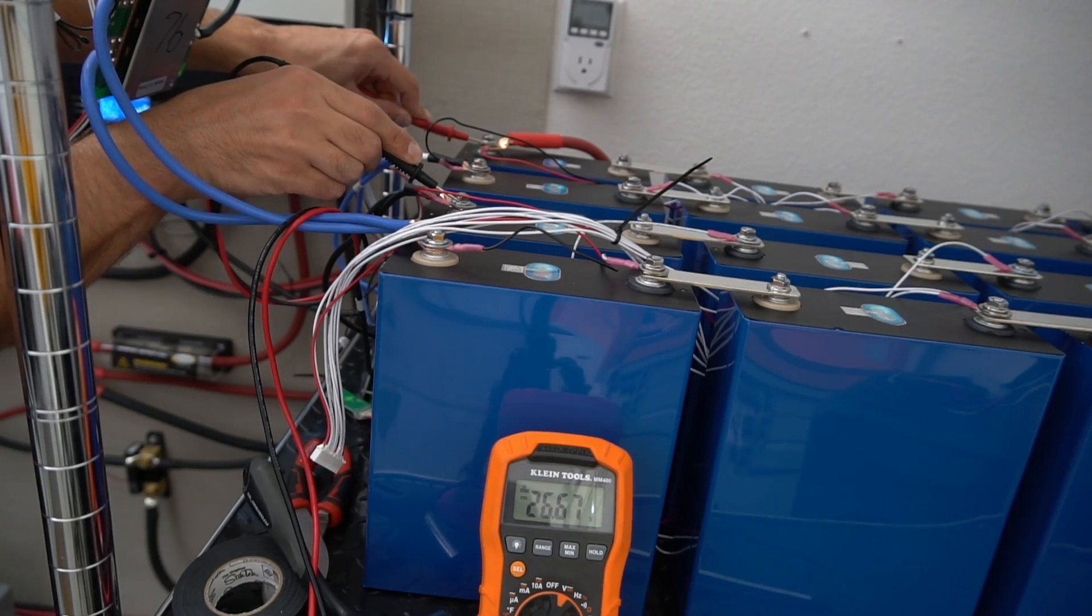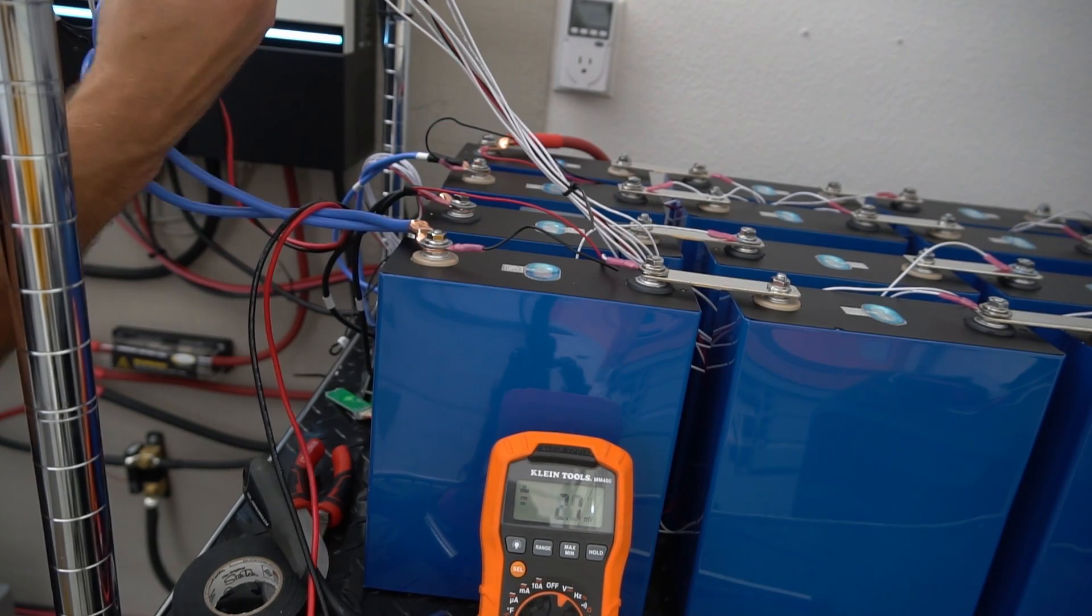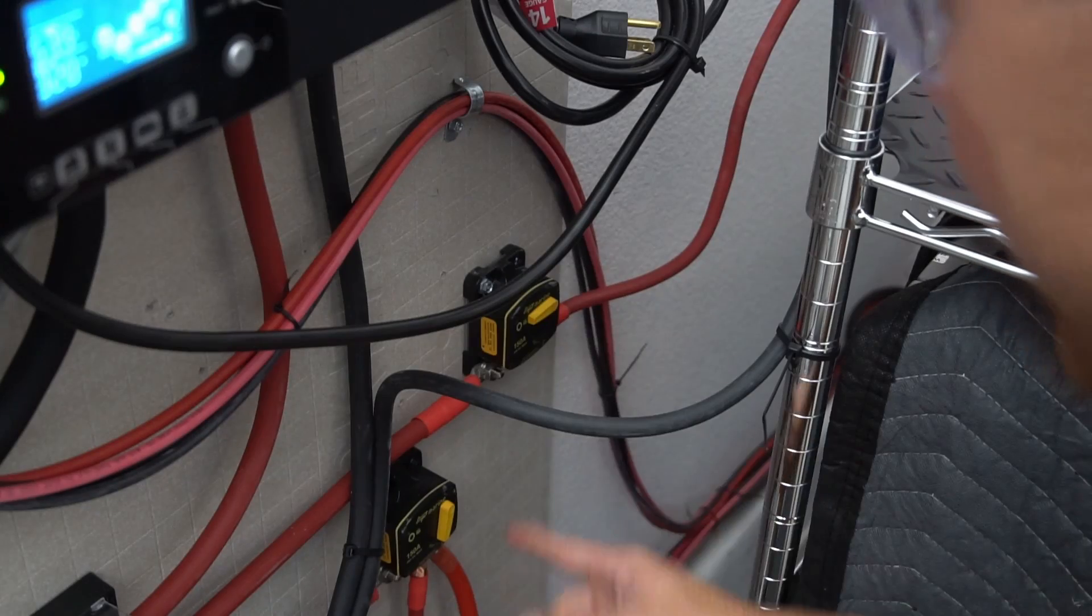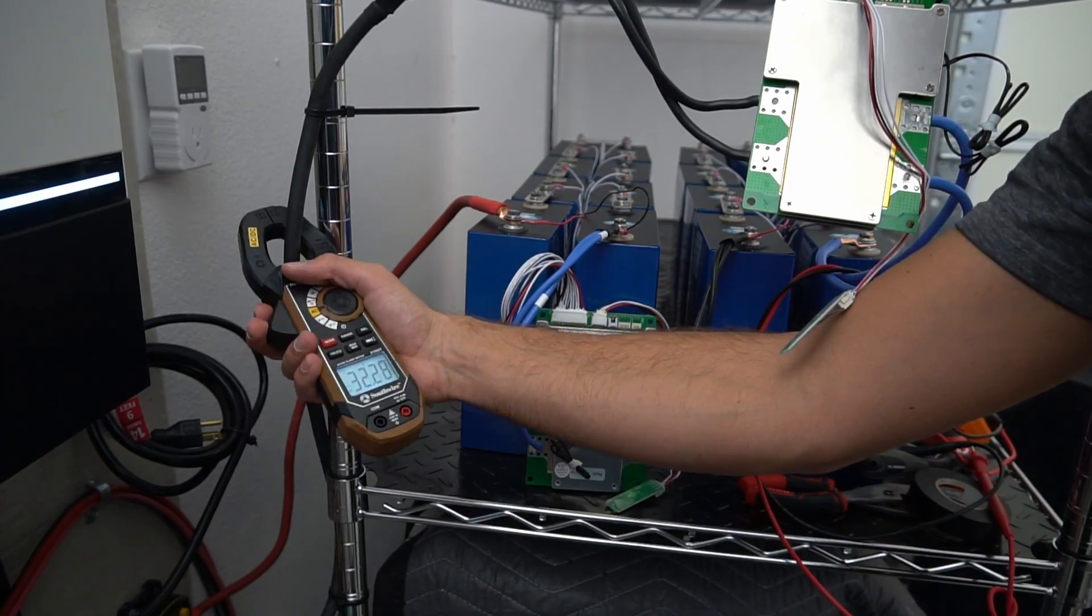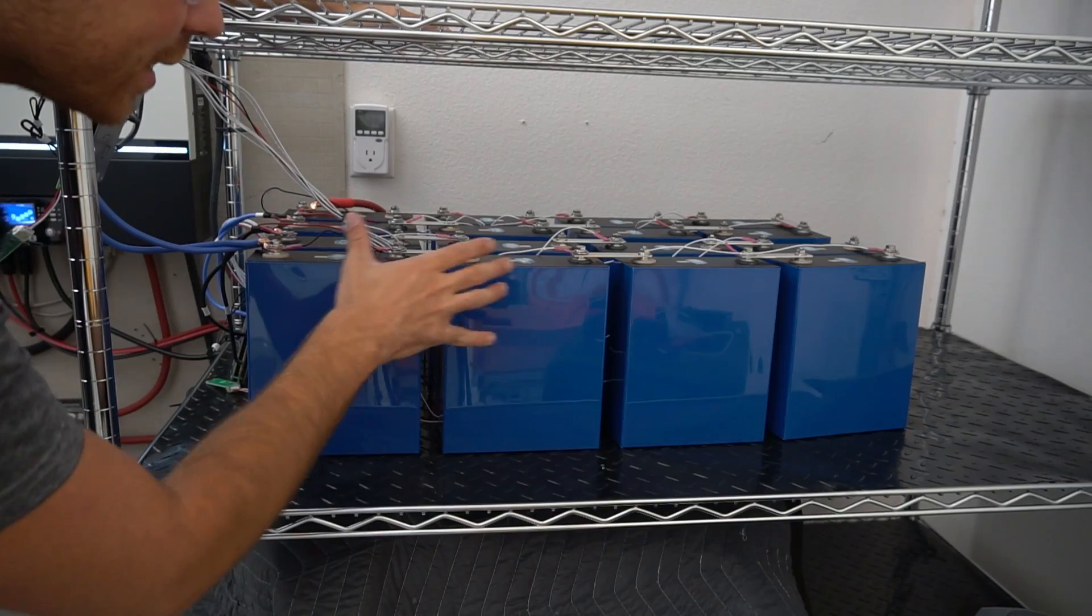First I'm going to connect these batteries in series by connecting the balance cable into this BMS. And the first pack is now active. Now we're going to attach the second pack. We have 53 volts so we're set to go. Now we need to close the circuit breaker and it's charging so we got 32 amps going into the battery right now.